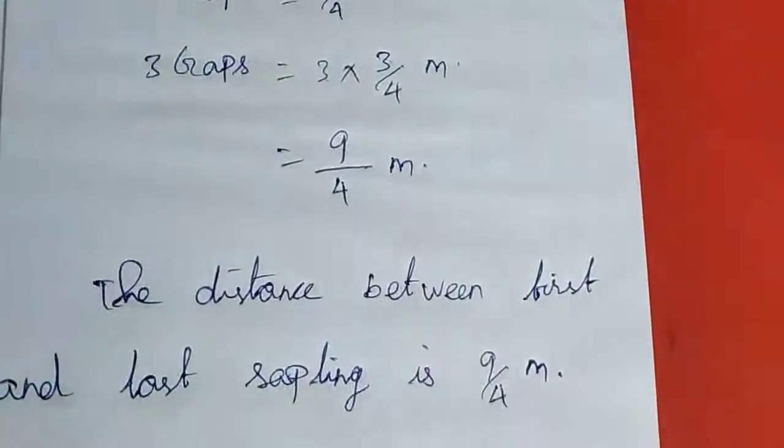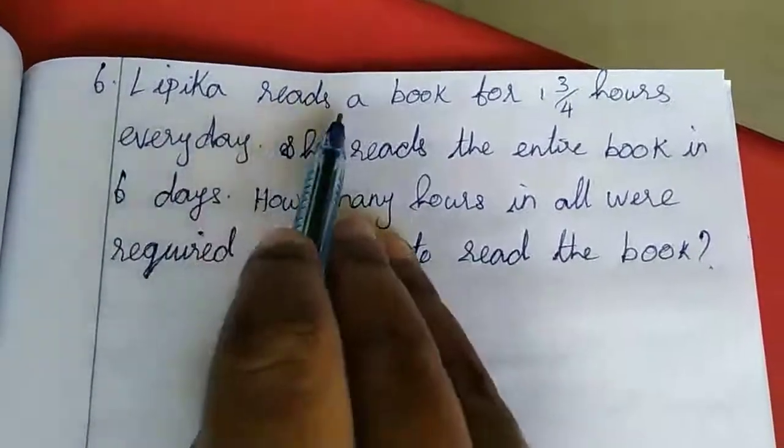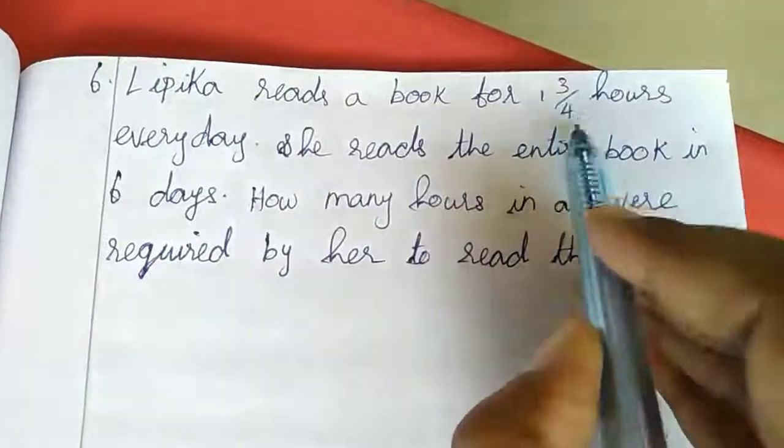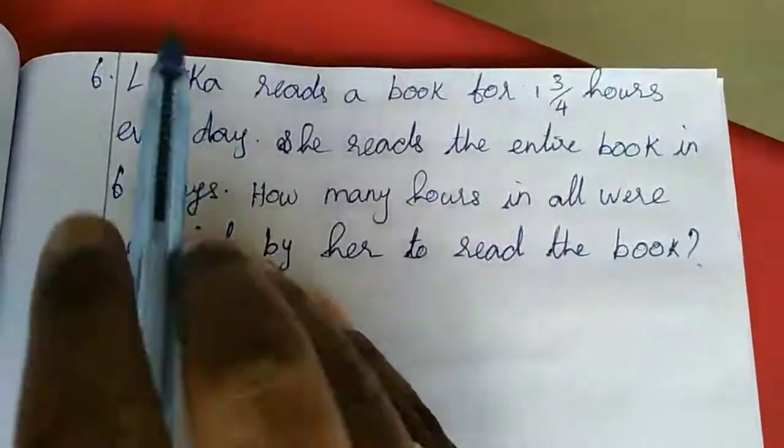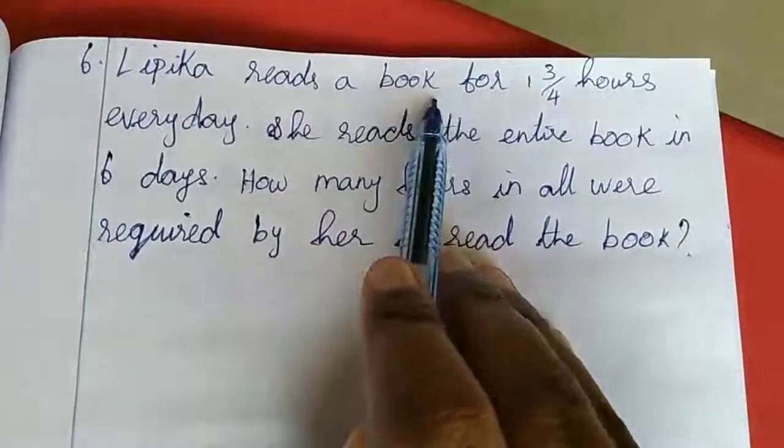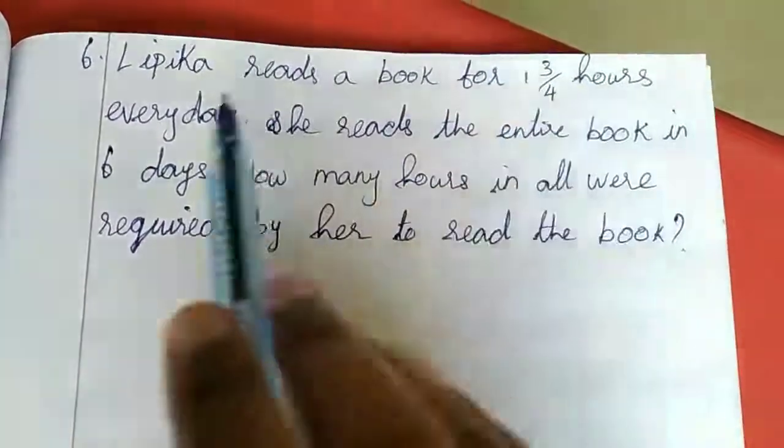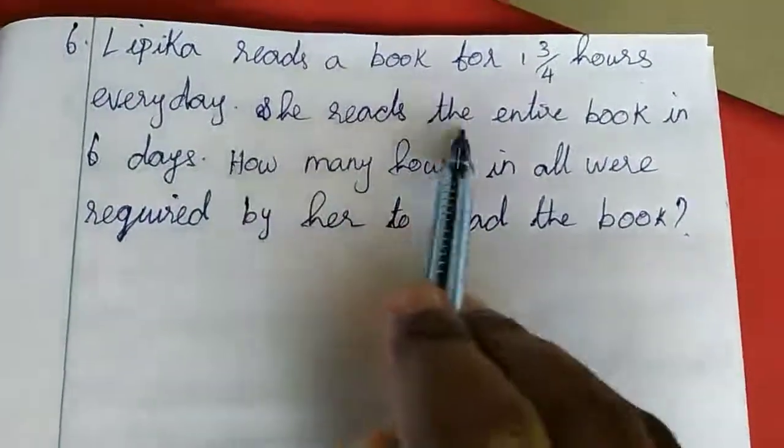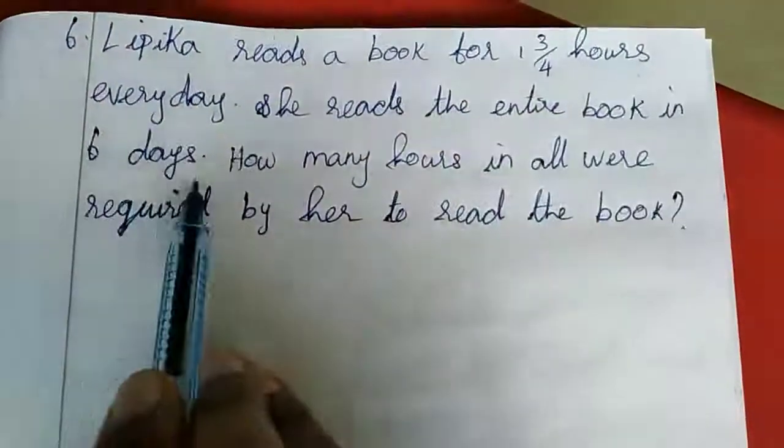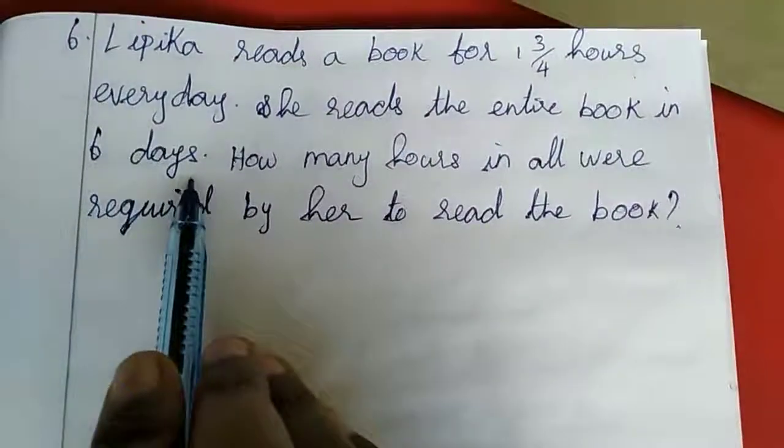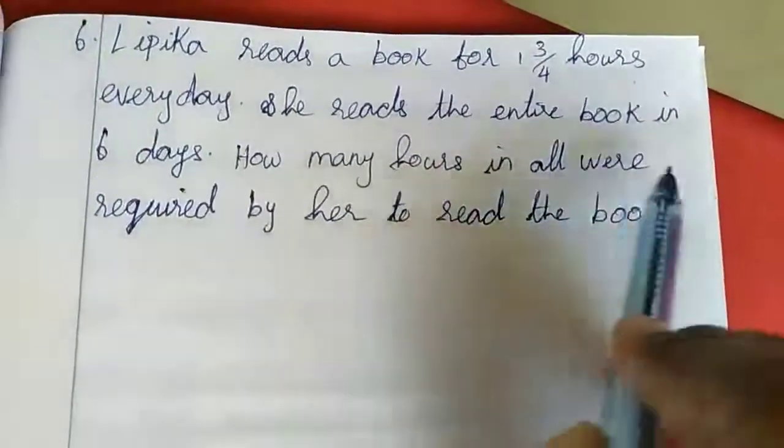Now we will move to the 6th sum. Lipika reads a book for 1 3/4 hours everyday. She reads the entire book in six days. How many hours are required by her to read the book?